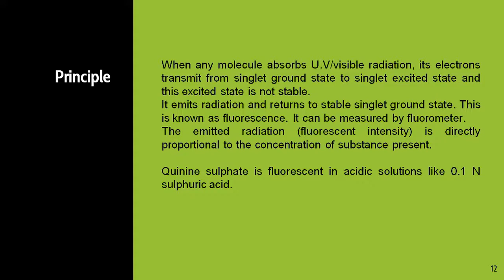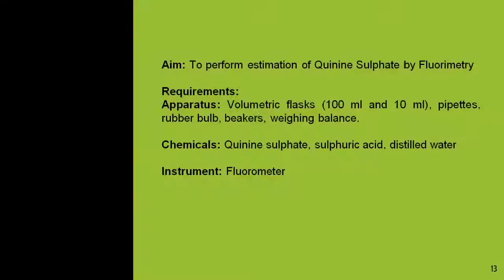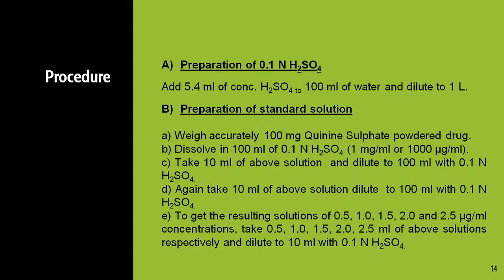Quinine sulfate is fluorescent in acidic solutions like 0.1 normal sulfuric acid. We are going to estimate the concentration of an unknown sample of quinine sulfate with fluorometry, and we will prepare the solutions in 0.1 normal H2SO4. For preparation of 0.1 normal H2SO4, add 5.4 ml of concentrated H2SO4 to 100 ml of water and dilute up to 1 liter, giving 1000 ml of 0.1 normal sulfuric acid. This sulfuric acid will be used to dissolve quinine sulfate and for further dilutions.